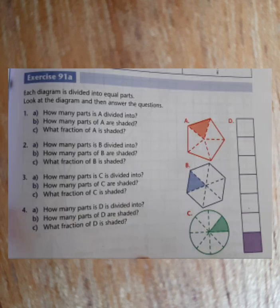Okay, so now you're going to do Exercise 91a. The questions are as follows: Each diagram is divided into equal parts. Look at the diagram and then answer the questions. For question one, it says how many parts is A divided into? So you've got to see how many are there in total in that shape.